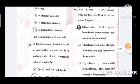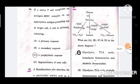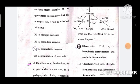Question number 46: What are A, B, C, D in the above diagram? The correct answer is option A, glycolysis, TCA cycle, homolactic fermentation and alcoholic fermentation.